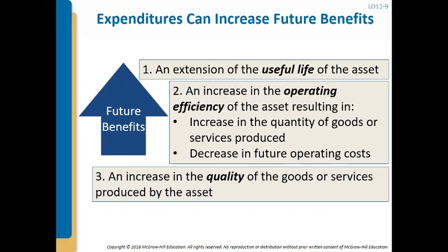Expenditures can increase future benefits by extension of useful life, or by creating an operating efficiency of the asset. Improvements to the current state of a piece of equipment might cause more products to be produced over time, or decrease future operating costs. If you make an expenditure that increases the quality of goods produced by the asset, that also increases future benefits and must be capitalized.